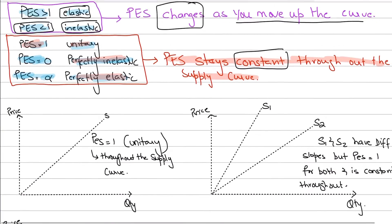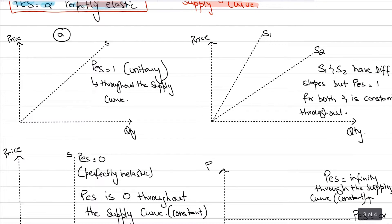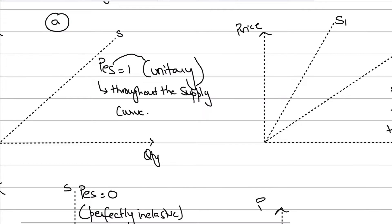In diagram A, we have the case where PES equals 1 — that is, unitary elastic. Whenever the supply curve is unitary elastic, it always starts from the origin and moves upward. Remember: whenever the supply curve starts from the origin, PES equals 1, and it is constant throughout the curve — at any point on that supply curve, the elasticity will always be equal to 1.